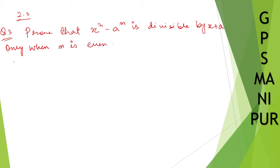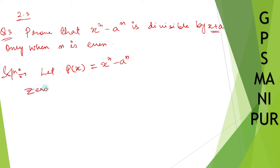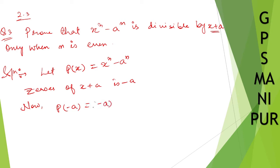Solution: Let p(x) = x^n minus a^n. Since we need to find whether it is divisible by x plus a, the zero of x plus a is minus a. So now p(-a) = (-a)^n minus a^n.